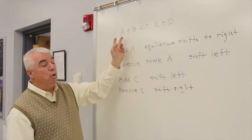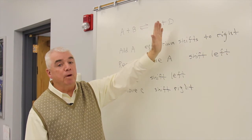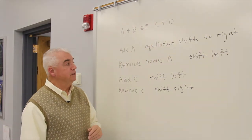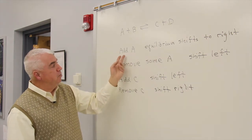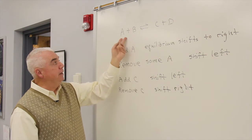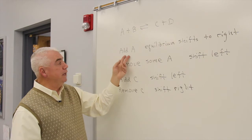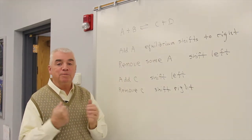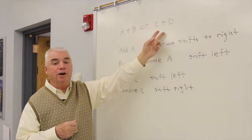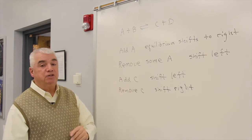Let's see what happens if we do the opposite. Let's remove some A. Well, that's not quite as easy to rationalize. But if adding A shifts to the right, then removing A certainly would shift the equilibrium to the left. I think you can envision how that might happen. If it's necessary for A and B to collide to form products, and we add more A, there are going to be more collisions between A and B. And so we'll get more product. Let's look at C. Let's add C.